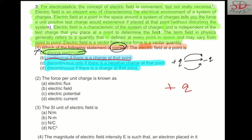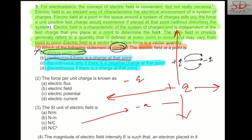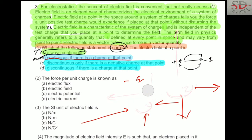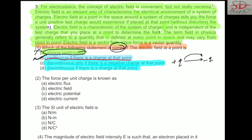Suppose there is a charge at a point. The lines of force go out from a positive charge, and for a negative charge the lines of force come in. This means the field is discontinuous at that point if there is a charge at that point; otherwise it is continuous. So the correct answer is: discontinuous if there is a charge at that point.